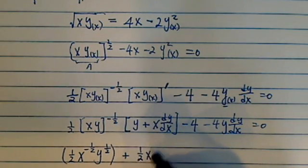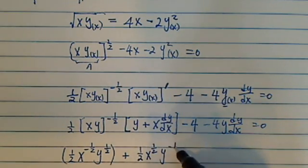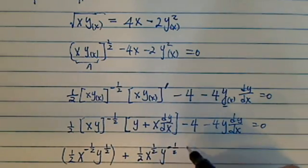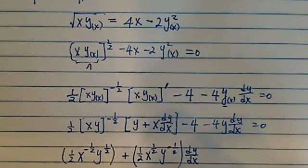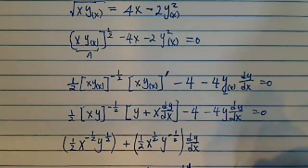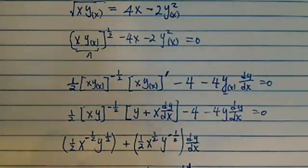So now I'm combining this one. This is a dy/dx. So I have one group here. I have a minus 4y dy/dx. It's over here. And then I have a minus 4 equal to 0.